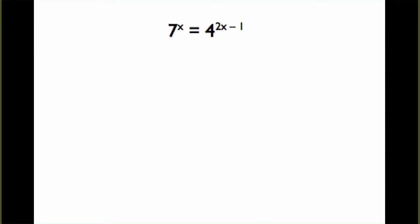The final example here that we have to do a little bit differently than the others is this expression: 7 to the x equals 4 to the 2x minus 1. So, here we can't just take the log base 7 or log base 4 of each side because they have different bases.